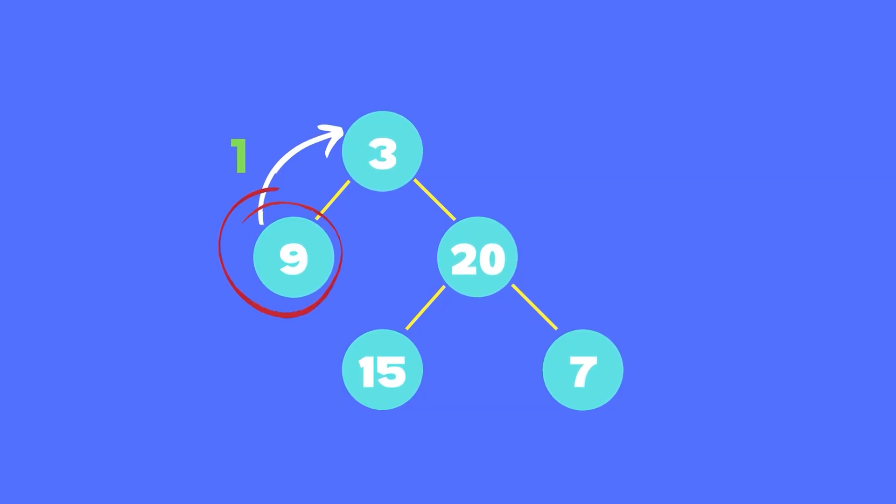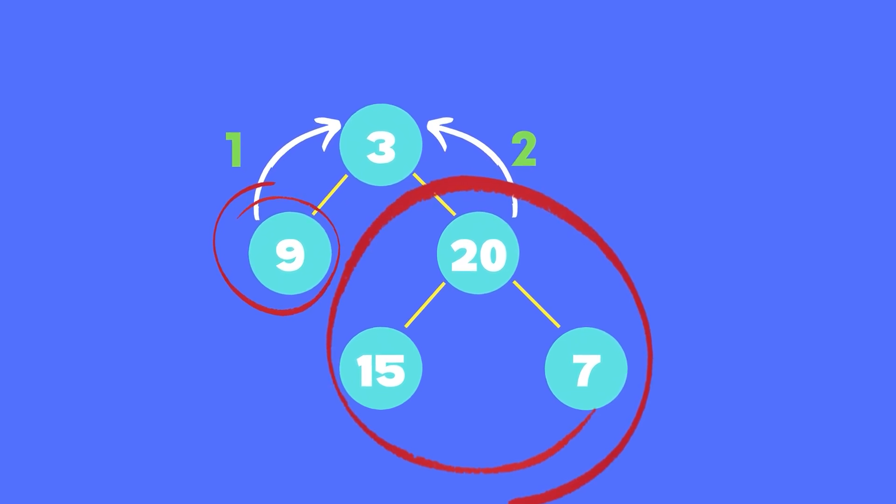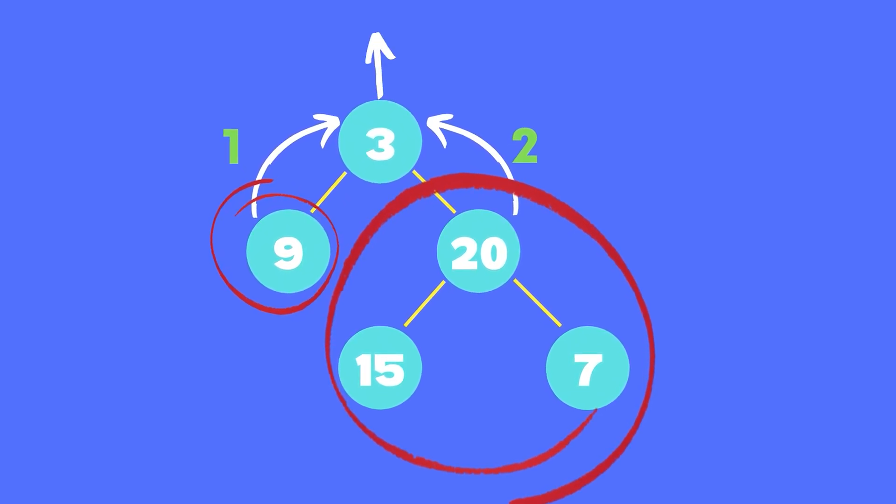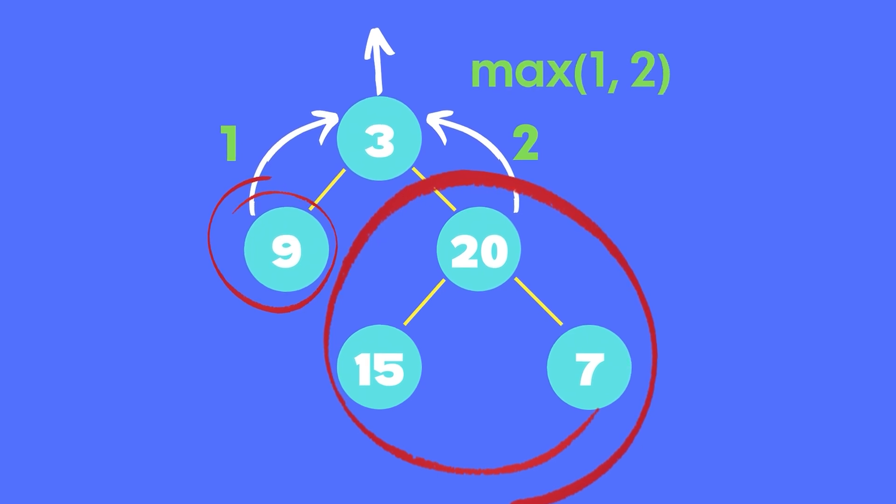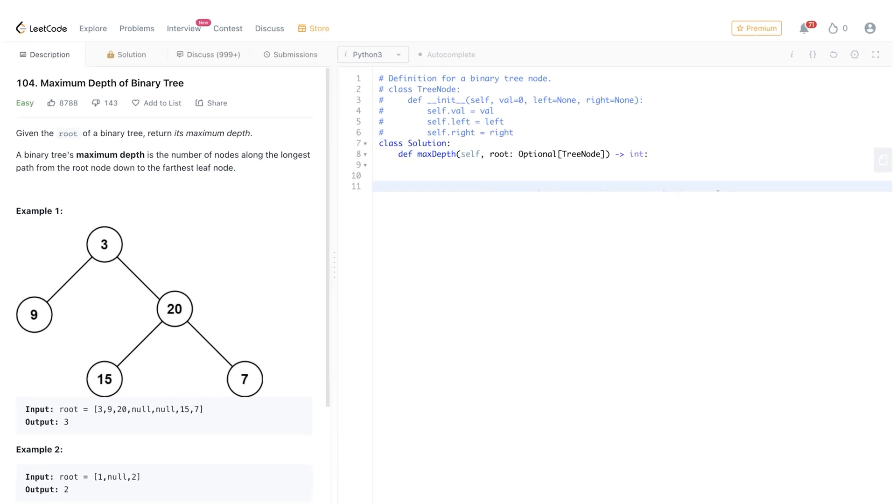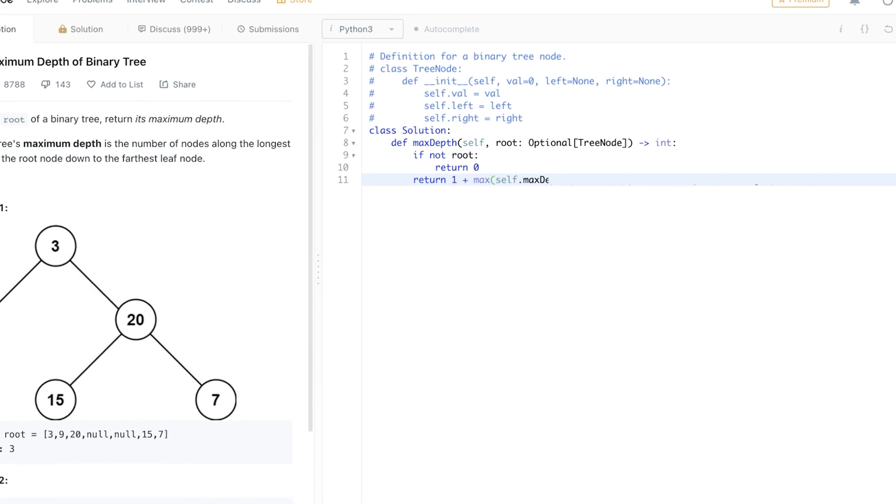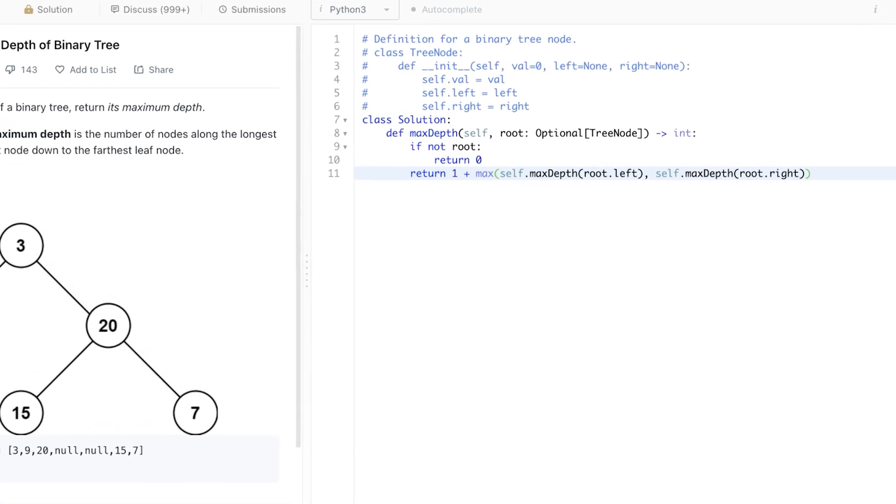If you know the maximum depth of the left subtree and you know the maximum depth of the right subtree, what would be the maximum depth of the entire tree? It would be the maximum of the two max depths you got from the left and the right subtree plus one. And when you try to code this solution, it looks like this. If you at least the end are null, you return zero. Otherwise, you return the max of max depth of the left and right subtree plus one.